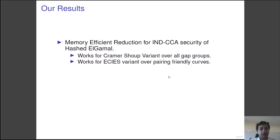In this paper, we find memory efficient reduction for the IND-CCA security of hashed ElGamal. Our reduction works for two variants, namely the Cramer-Shoup variant and the ECIES variant. For the Cramer-Shoup variant, our reduction works for all the gap groups. However, for ECIES variant, we require the group to have pairings.